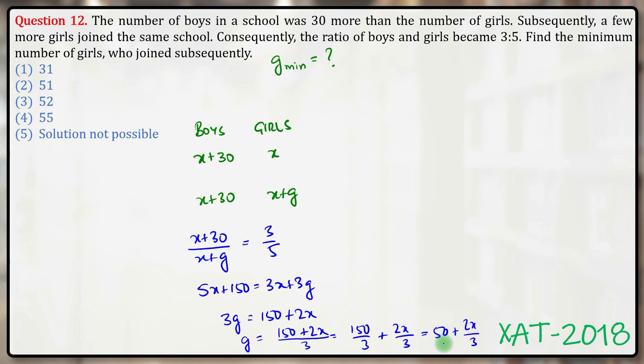Now we know that the number of girls who joined must be an integer. Therefore, we can say that 50 plus 2x by 3 must be an integer. Now for 2x by 3 to be an integer, x should be a multiple of 3 so that it cancels out. So the minimum possible value of x is 3.